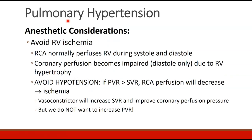Our next major goal is to avoid right ventricular ischemia. In a healthy patient, the right coronary artery perfuses the right ventricle during both systole and diastole. As patients with pulmonary hypertension develop right ventricular hypertrophy, coronary perfusion becomes impaired and flows only during diastole. In cases of hypotension where pulmonary vascular resistance exceeds systemic vascular resistance, perfusion of the right coronary artery decreases further and can lead to ischemia. A vasoconstrictor may increase SVR and improve coronary perfusion pressure, but we must avoid one that also increases pulmonary vascular resistance.